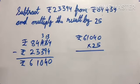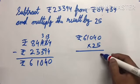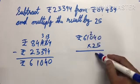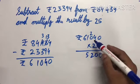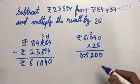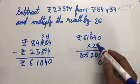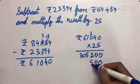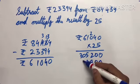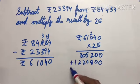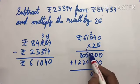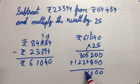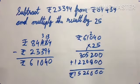61,040 multiplied by 25. First multiply by 5: 5 times 0 is 0, 5 times 4 is 20, 5 times 0 is 0 plus 2 is 2, 5 times 1 is 5, 5 times 6 is 30. Now multiply by 2, first put 0: 2 times 0 is 0, 2 times 4 is 8, 2 times 0 is 0, 2 times 1 is 2, 2 times 6 is 12. Now add: 0 plus 0 is 0, 0 plus 0 is 0, 2 plus 8 is 10, 5 plus 1 is 6, 0 plus 2 is 2, 3 plus 2 is 5, and 1. This is our answer.